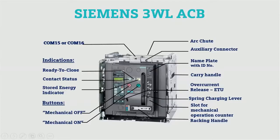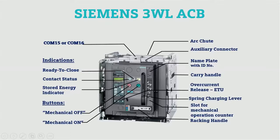Starting from the nameplate, you will get detailed information on current and voltage ratings and technical data. There are two mechanical buttons — on and off — to open or close the contacts. There is also a spring charging lever; by using this lever you can charge the spring, and from the window you can see whether the spring is charged or not. The contact status — whether the contact is closed or open — is also indicated here, along with an ACB indication for ready to close.